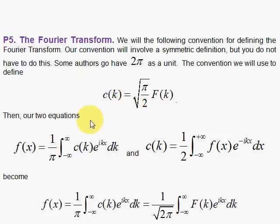Well, we already have the Fourier Transform from our previous section. This is it right here. C of k is the Fourier Transform of f of x, and this gives you the inverse Fourier Transform, and there's nothing wrong with this definition for the Fourier Transform.